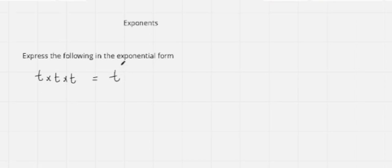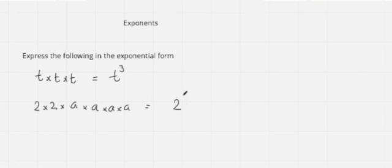Now we have the question: express the following in exponential form. I have t multiplied with t multiplied with t — here t is multiplied 3 times, so I can write t power 3. This is the exponential form. If I have 2 multiplied with 2 multiplied with a multiplied with a multiplied with a multiplied with a, then 2 is multiplied 2 times so I write 2 power 2, and a is multiplied 4 times so I write a power 4. So the answer is 2 power 2 multiplied with a power 4.